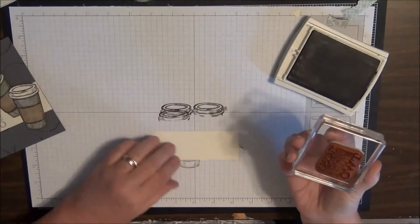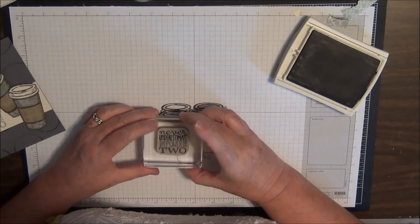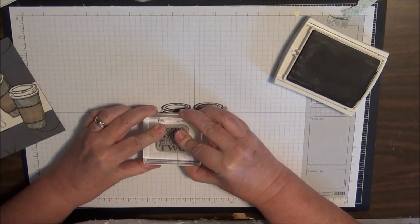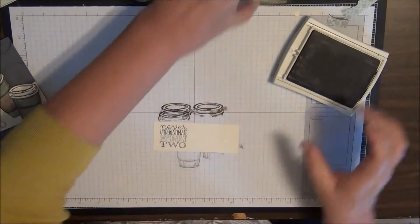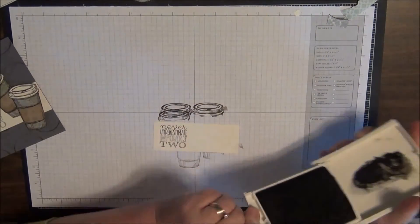On this band I'm going to stamp my 'Never underestimate the power of two.' Let me just throw that to the side and I'm going to stamp that with Basic Gray. I'm just going to stamp it on the left side. I held my breath to make sure it was straight.